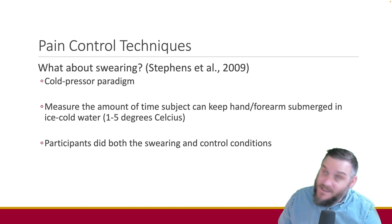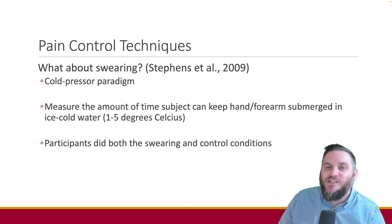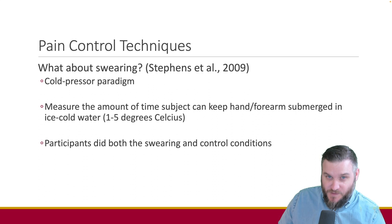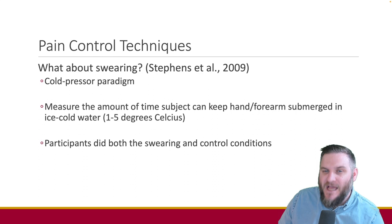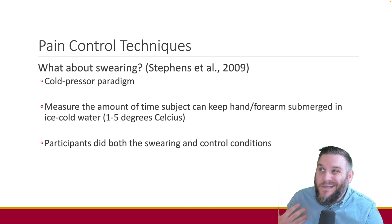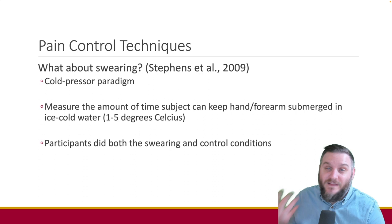To investigate, researchers Stevens et al. conducted an experiment. Their hypothesis was that swearing, considered a maladaptive response to pain, would decrease pain tolerance and increase pain perception compared to not swearing. Participants in the study were asked to provide five words they would use after hitting their thumb with a hammer, with the first swear word on the list being used as the swear condition.